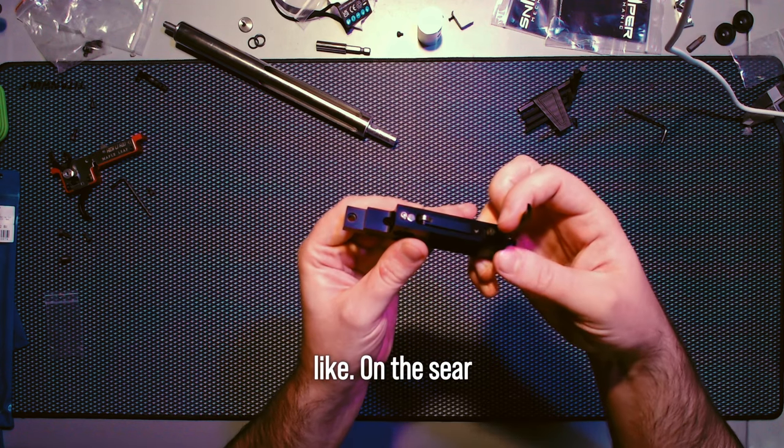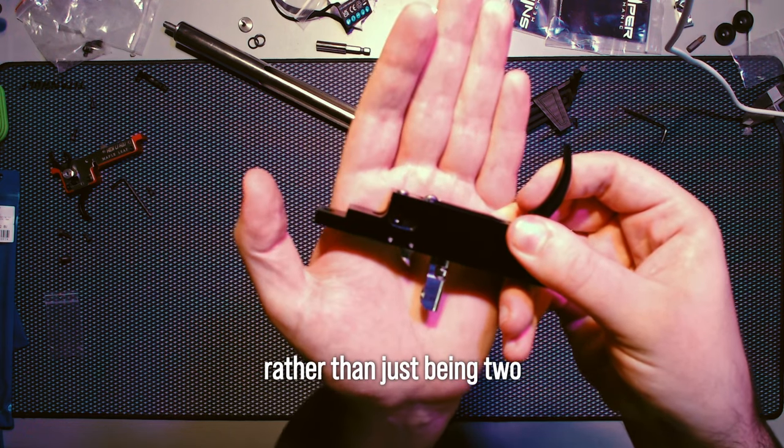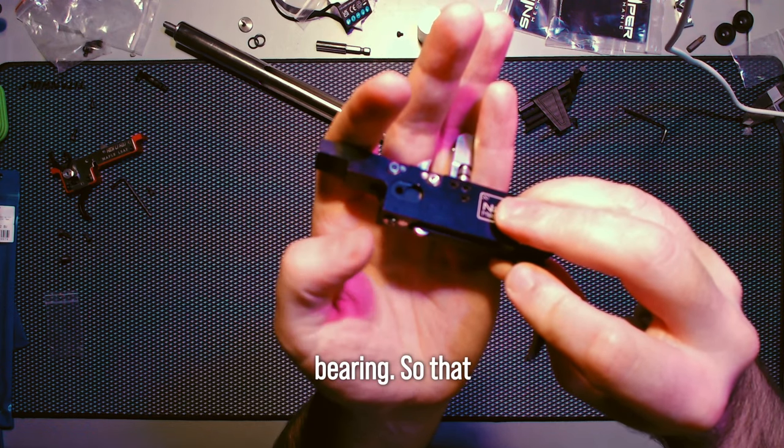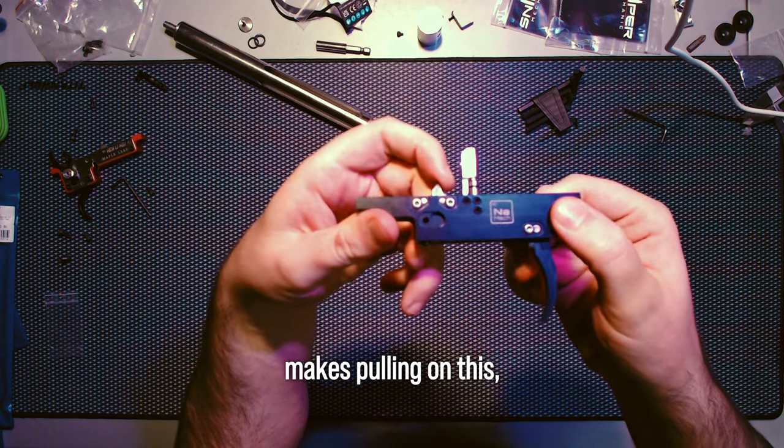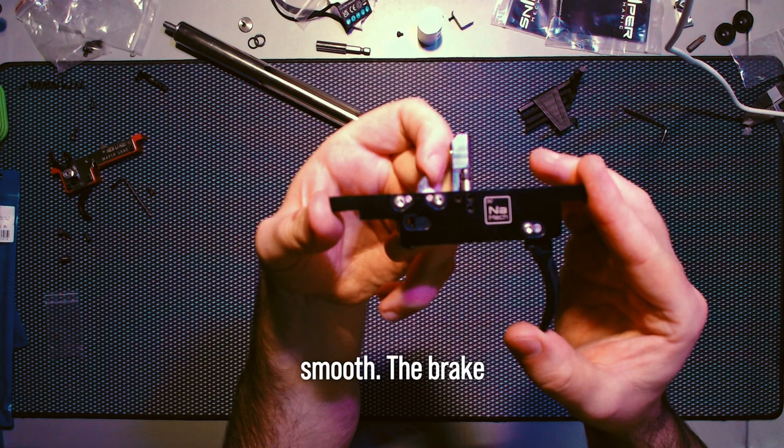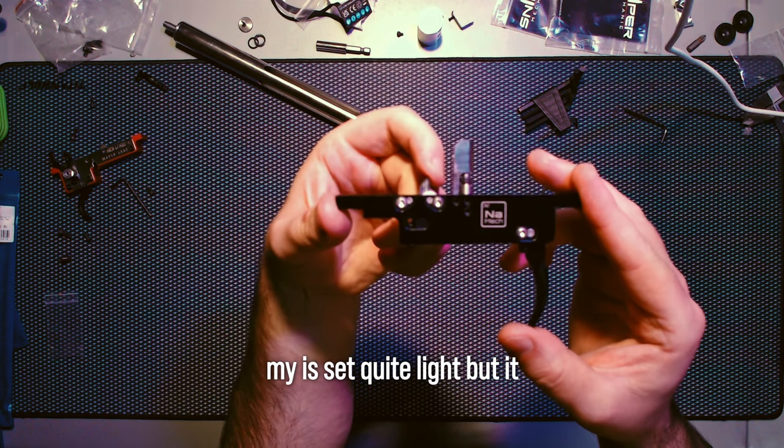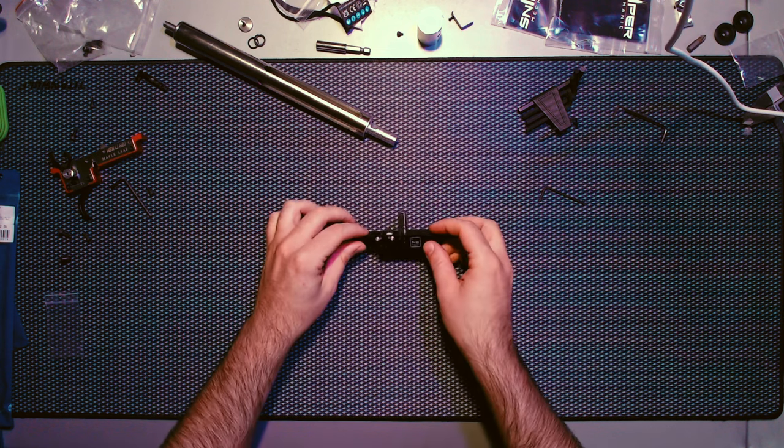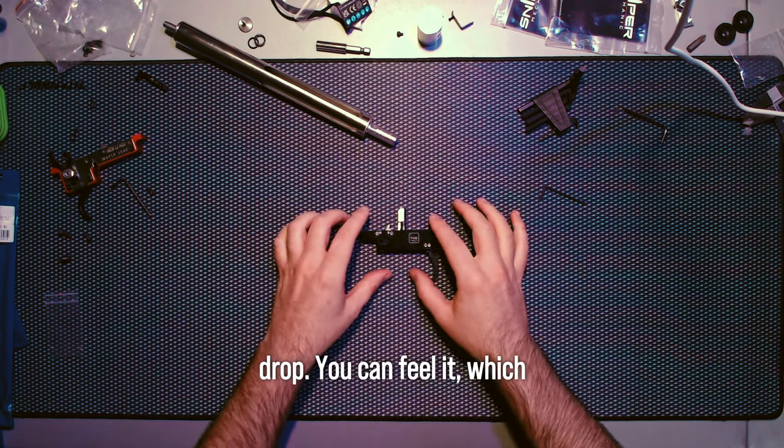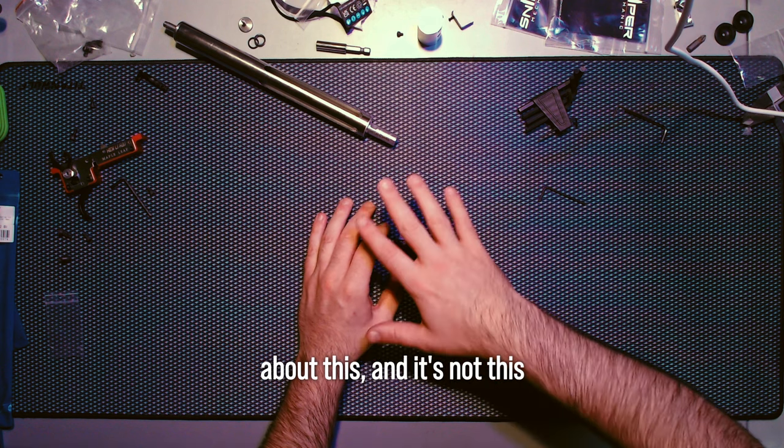Other features I like - on the sear here where it releases there is a small bearing, a roller bearing. That makes pulling on this very smooth. The break is quite light but it just rolls off, it's really nice, really crisp. There's no grating, it isn't like an immediate drop, you can feel it which is quite nice.